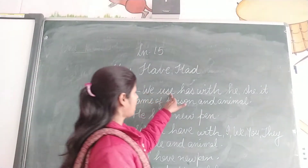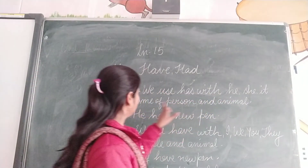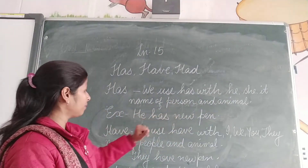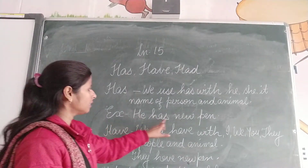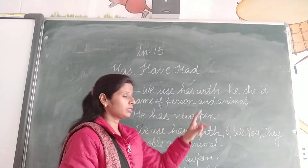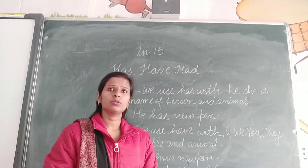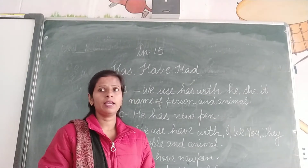We use has with he, she, it, name of a person and animal. For example, he has a new pen — us ke paas, ek ladka hai, us ke paas ek new pen hai.